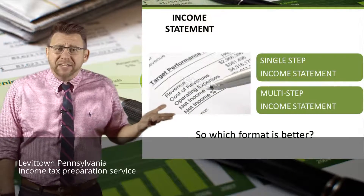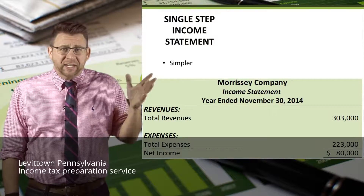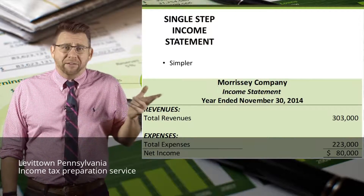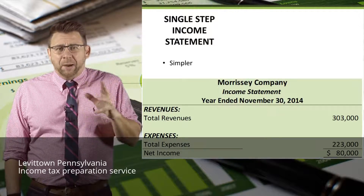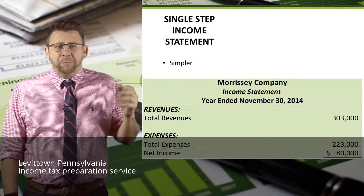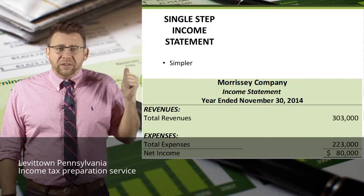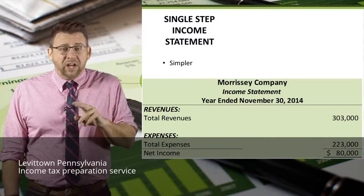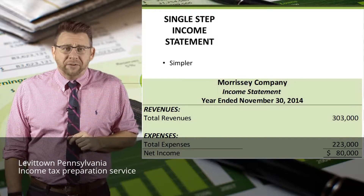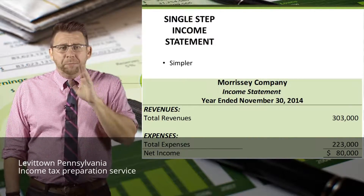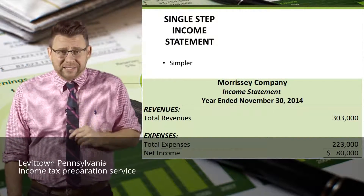So which format is better? Well, it depends. The single-step is easier to read and understand. For service firms which don't have gross profit and where there isn't a lot of benefit from distinguishing between operating and non-operating activities, it's the simple way to express profitability. But there are drawbacks — in the example, this firm earned $80,000 of net income on $303,000 of revenue. How repeatable is that next year? Let's answer that by looking at the multi-step format.